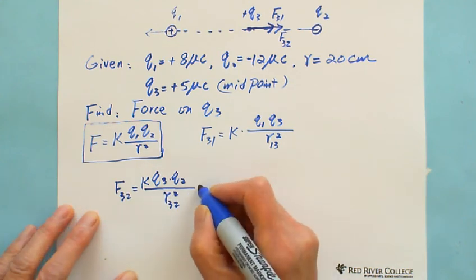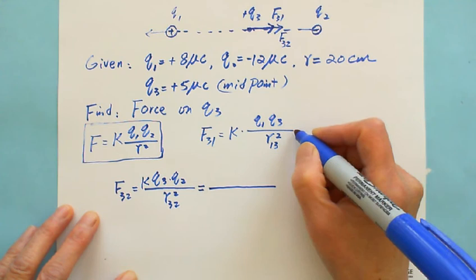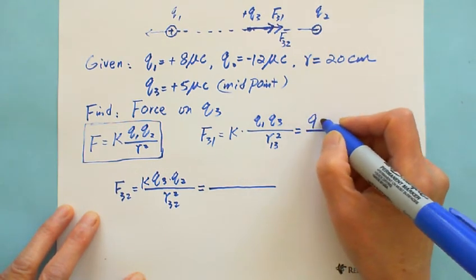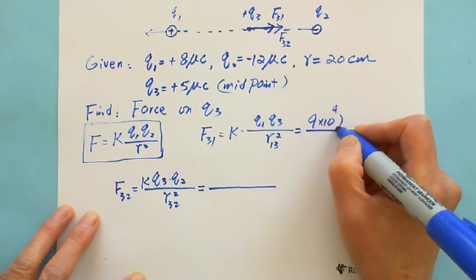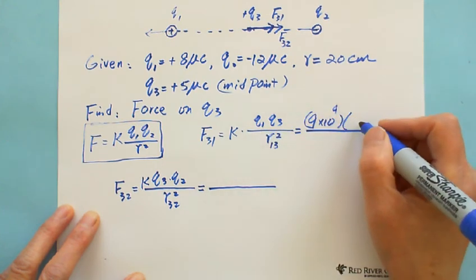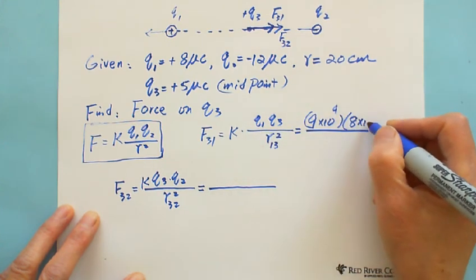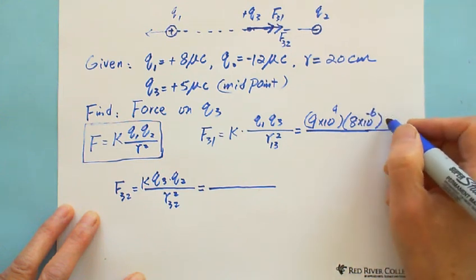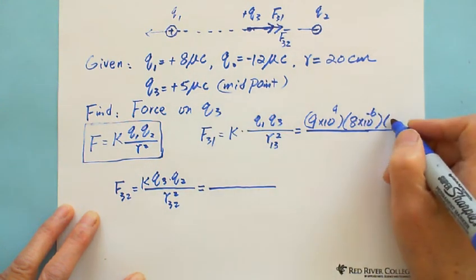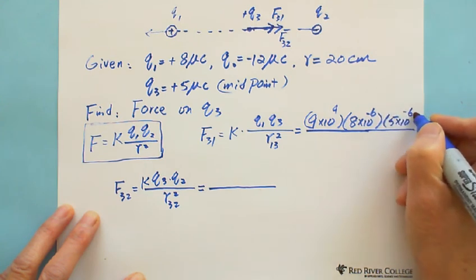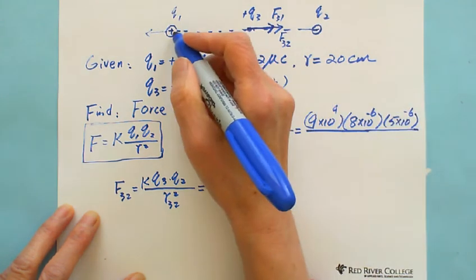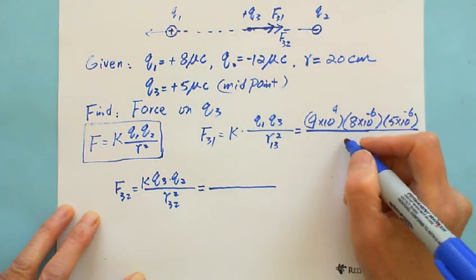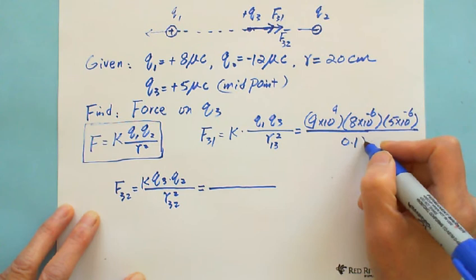Now we can plug the numbers in. K is 9 times 10 to the 9. Q1 is 8 times 10 to the negative 6. Q3 is 5 times 10 to the negative 6. The distance between Q1 and Q3 is half of 20 which is 10 cm, written as 0.1 m squared.